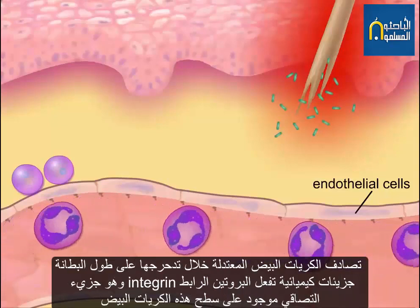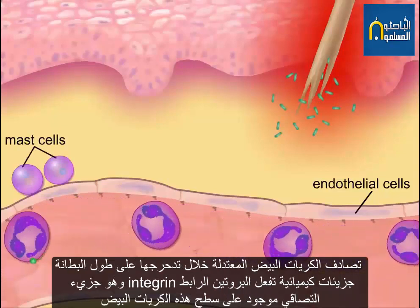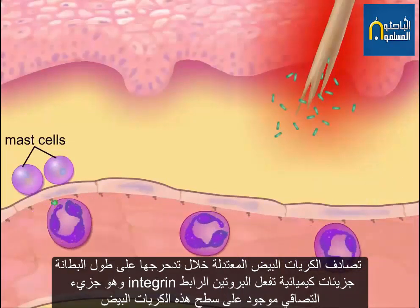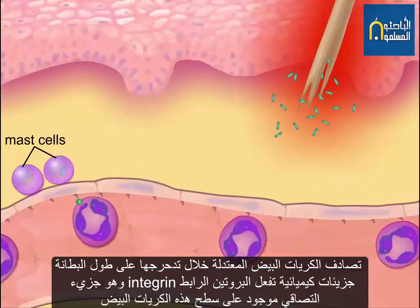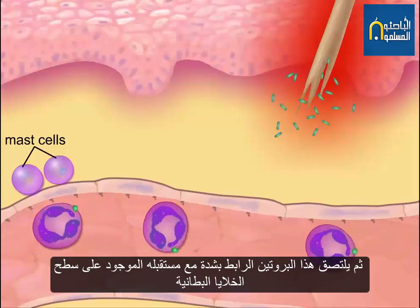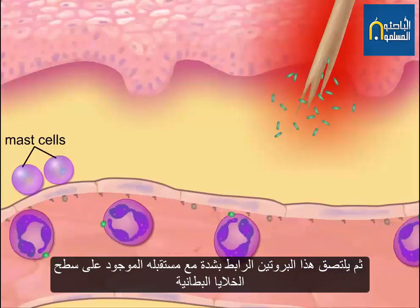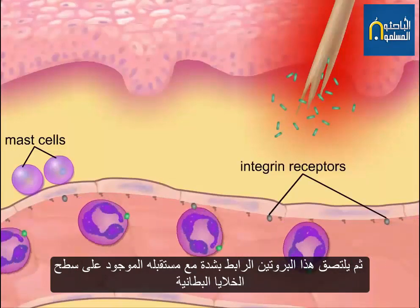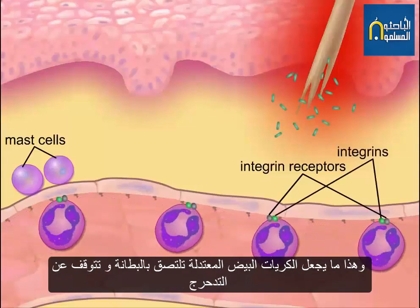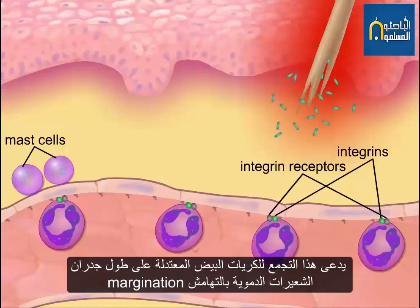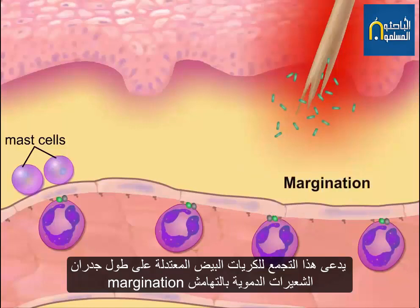As the neutrophils roll along the endothelium, they encounter chemicals that activate integrins, which are adhesion receptors on their surfaces. These integrins then tightly attach to adhesion receptor molecules on the endothelial cells, causing the neutrophils to stick to the endothelium and stop rolling. This accumulation of neutrophils along the walls of the capillary is referred to as margination.